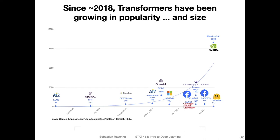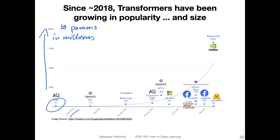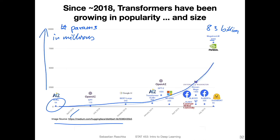Since 2018, the field of natural language processing with transformers has grown tremendously. On the y-axis — the number of parameters in millions — you can see a huge growth curve. It's always unfortunate when people don't label the y-axis, but I think in this article they meant parameters in millions. One model here would be 8.3 billion parameters. There's been huge growth in terms of model sizes, but also a huge growth in popularity — it's an exponential growth, a very popular field.